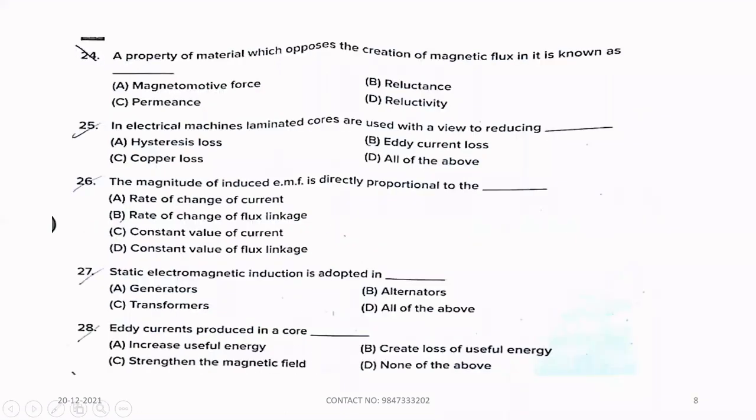Twenty-fourth question. A property of material which opposes the creation of magnetic flux in it is known as reluctance. Option B. Twenty-fifth question. In electrical machine, laminated cores are used with a view to reducing. Option B, Eddy current loss.